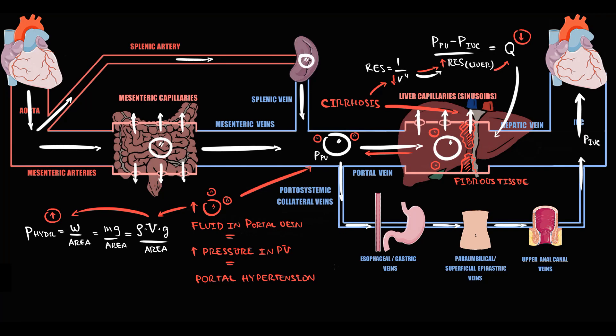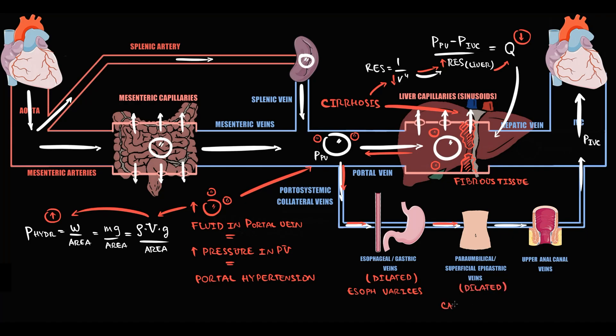The problem is that progressive increase in hydrostatic pressure causes progressive increase in wall tension, and at some point it will cause rupture of the portal vein. So the organism has to decompress the portal vein — and this is the moment when portosystemic collateral vessels come into play. A large portion of excess fluid goes into the portosystemic collateral vessels: inflow into esophageal and gastric veins causes dilation with formation of esophageal varices; inflow into paraumbilical and superficial epigastric veins causes dilation with formation of Caput Medusae; and inflow into upper anal canal veins causes dilation with formation of hemorrhoids. Excess blood then drains into the inferior vena cava via these collateral vessels.